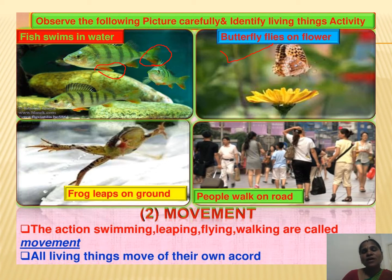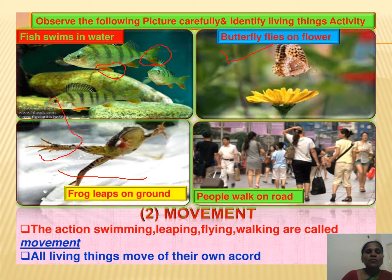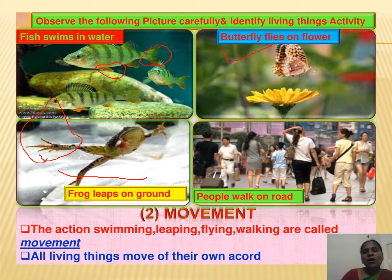Even birds also fly with the help of wings. Butterflies fly to flowers to get their food — the liquid in flowers is called nectar, and butterflies suck nectar from flowers. Frogs can live in water as well as on land. In water, frogs swim with the help of their webbed feet, and on land they leap. People walk on the road with the help of their legs — human beings have two legs.